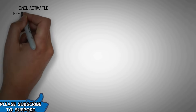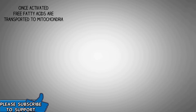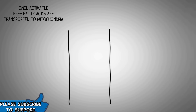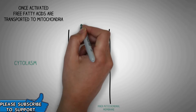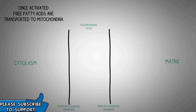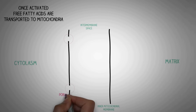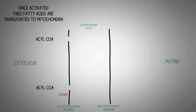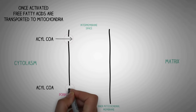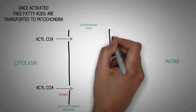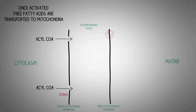Once activated, the free fatty acids are transported into the mitochondria. On one side we have the cytoplasm, the outer mitochondrial membrane, and the inner mitochondrial membrane; the space between them is the intermembrane space, and on the other side is the matrix. The outer mitochondrial membrane contains small pore-like structures called porins, making it very permeable — so acyl-CoA can freely enter the intermembrane space. However, the inner mitochondrial membrane is not permeable, so a special mechanism called the carnitine shuttle is required to transport acyl-CoA through it into the matrix.